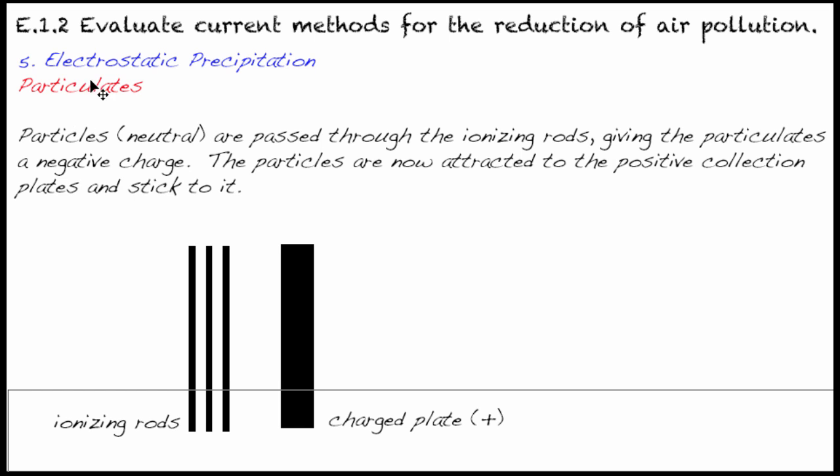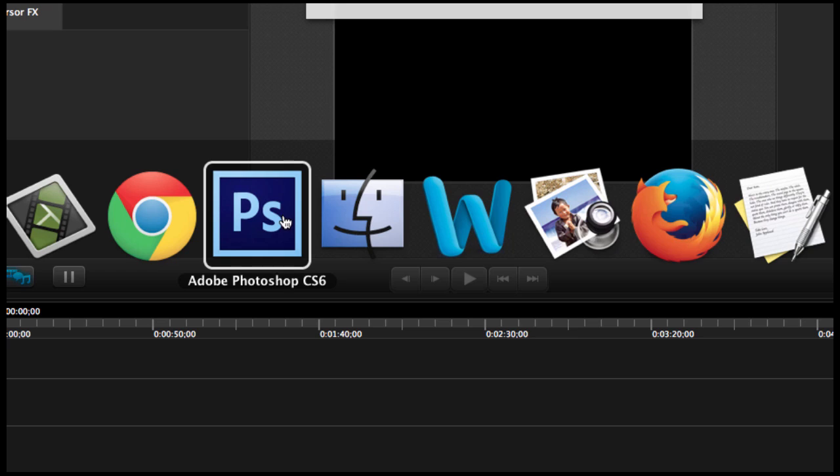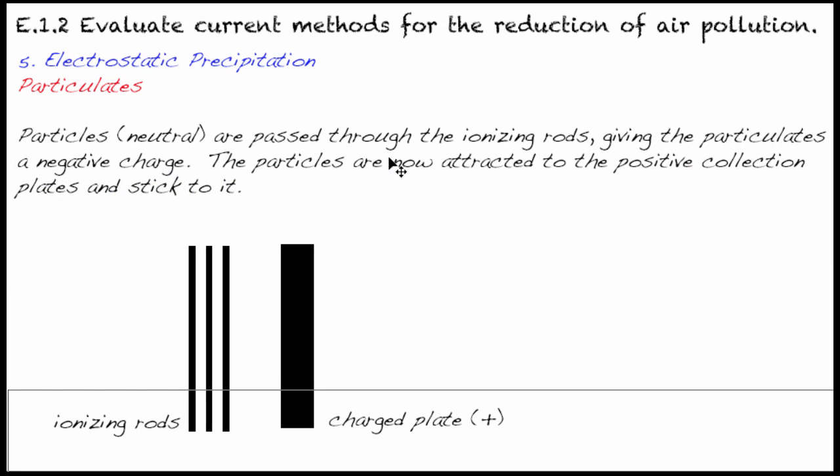Now onto our last topic, related to the particulates. So we got now to our last air pollutant. What will happen here is related to your air cleaners. I have one of these when I was in Beijing. A really high quality air cleaner will have electrostatic precipitation. It's going to use electricity to remove particulates so that they don't irritate or cause any harm to you as we saw in the previous E1.1. What happens basically is that you have particles that you want to get out of the air. They're passed through ionizing rods, which I've drawn here, giving the particulates a negative charge. What's basically happening is they are gaining an electron through those ionizing rods and creating ions.